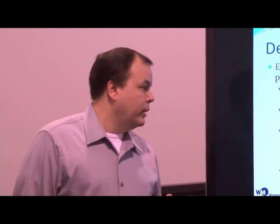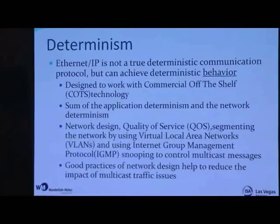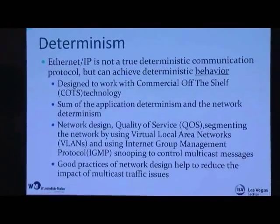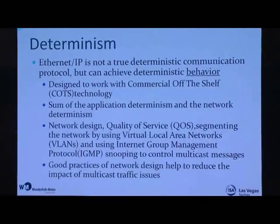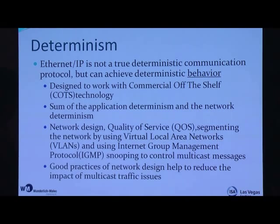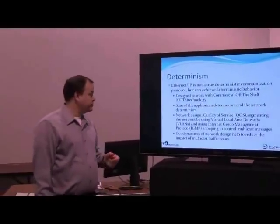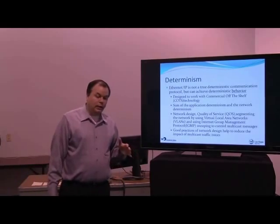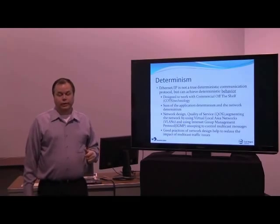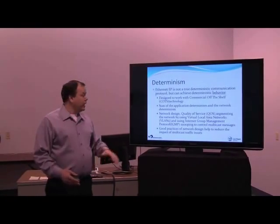One issue that has always surrounded industrial Ethernet protocols is determinism. Ethernet IP is not a deterministic network — meaning we cannot guarantee how long it takes for a message to travel and for the response to come back. If a switch goes down and the router has to reroute traffic, that adds latency that is not controlled or easily predicted. The reason Ethernet IP is non-deterministic is that it is designed to work with commercial off-the-shelf technology — most anyone's routers and switches will work with Ethernet IP, which provides advantages but also some disadvantages.